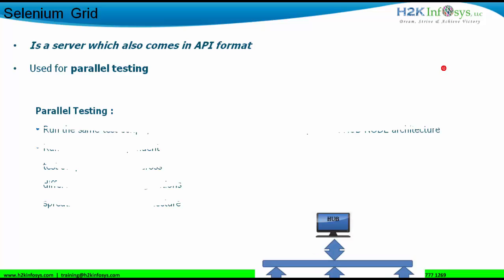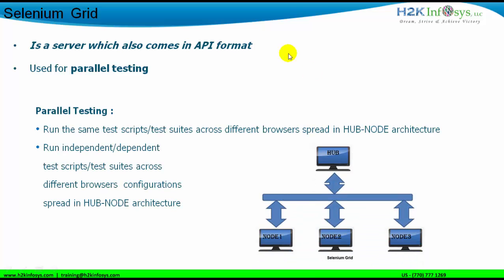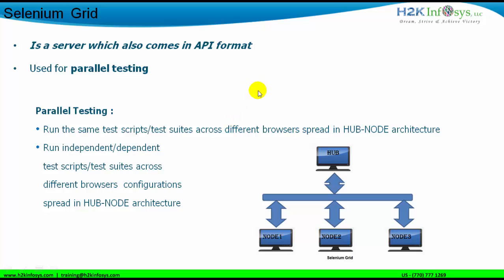Running the same scripts or test suites across different browsers spread across a hub-node architecture is possible with Selenium Grid. As you can see in the diagram, we have a hub configured with Selenium Grid, connected with nodes. Each node can have its own configuration or the same configuration, and we distribute test suites through these nodes to conduct parallel testing. We can also run independent or dependent test scripts across different browser configurations in this hub-node architecture.